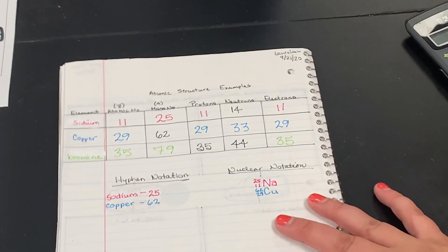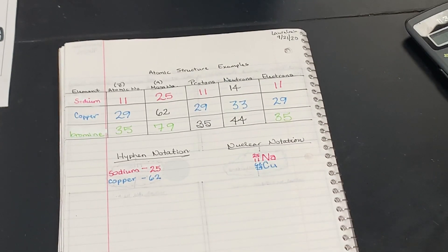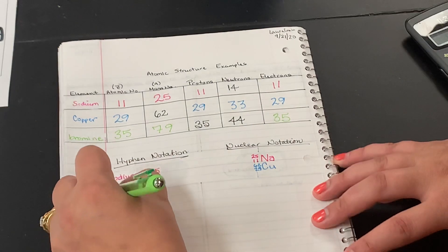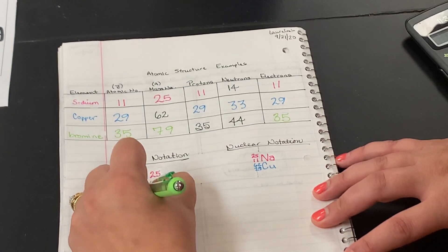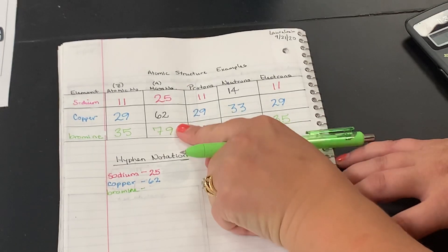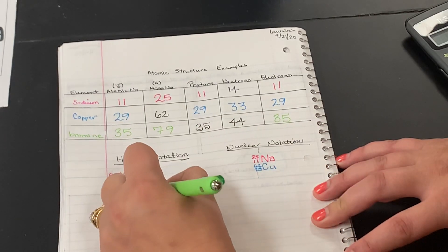So now let's go and write our notations down here. For the hyphen notation, we're going to write the name of the element, bromine, a hyphen, and then we need the mass number from up here, which was 79.